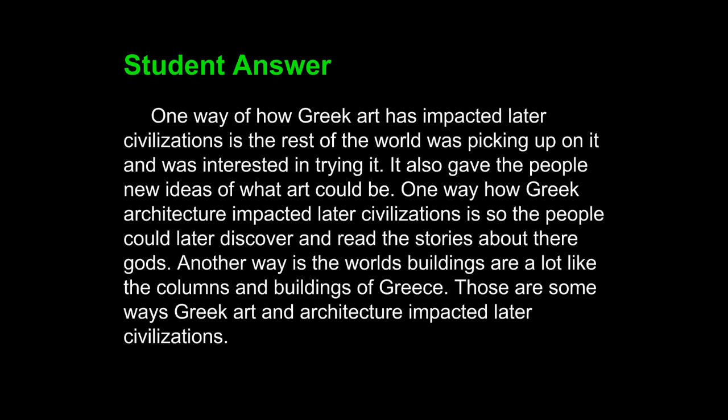Here's a typical student answer: 'One way of how Greek art has impacted later civilizations is the rest of the world was picking up on it and was interested in trying it. It also gave the people new ideas of what art could be. One way how Greek architecture impacted later civilizations is so the people could later discover and read the stories about their gods. Another way is the world's buildings are a lot like the columns and buildings of Greece. Those are some ways Greek art and architecture impacted later civilizations.' This student demonstrates much strength — understanding that he should include a topic sentence, a conclusion sentence, and examples. Unfortunately, none of this writing flows. It is repetitive, confusing, and awkward at times. We can revise this to make it a stronger paragraph and bring out those ideas more clearly.